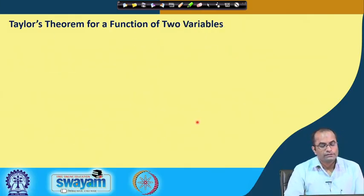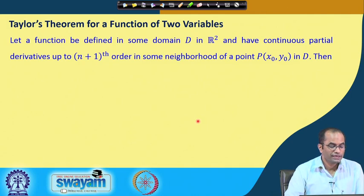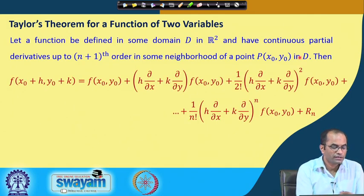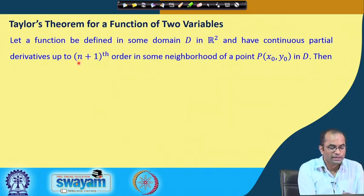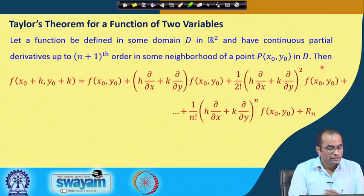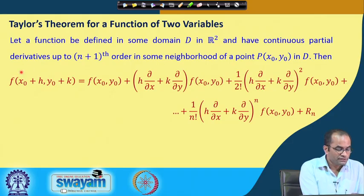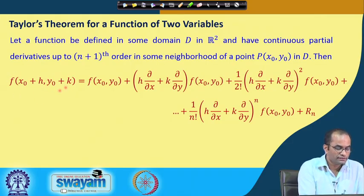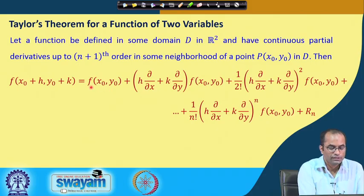Now for Taylor's theorem for a function of two variables: we have a function defined in some domain D with continuous partial derivatives up to order n+1 in some neighborhood of a point (x₀, y₀) in the domain. Then we can express f(x₀+h, y₀+k) — a point in the neighborhood of (x₀, y₀) — using this expansion.